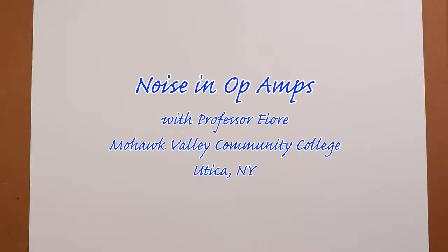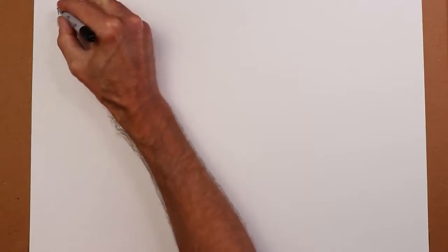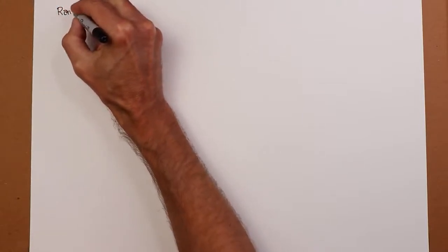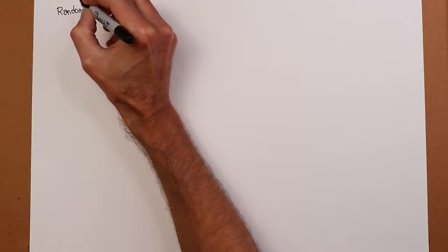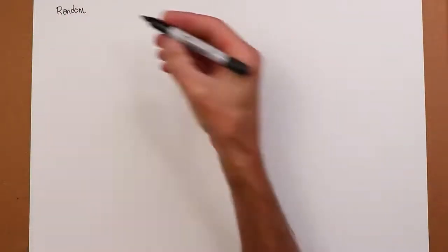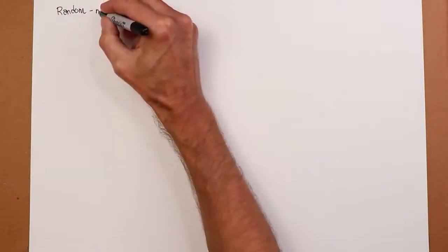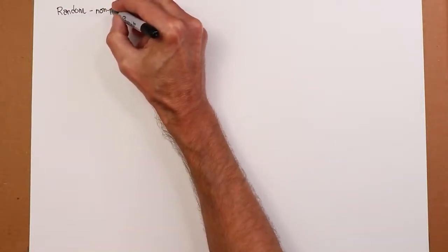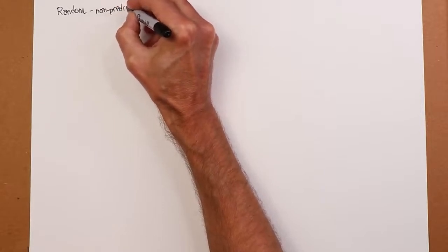Today we're going to take a look at noise, electrical noise generated in circuits. What is noise? Characteristics: it's a random signal, not correlated, not predictable. And that predictability aspect is really important. Non-predictable.